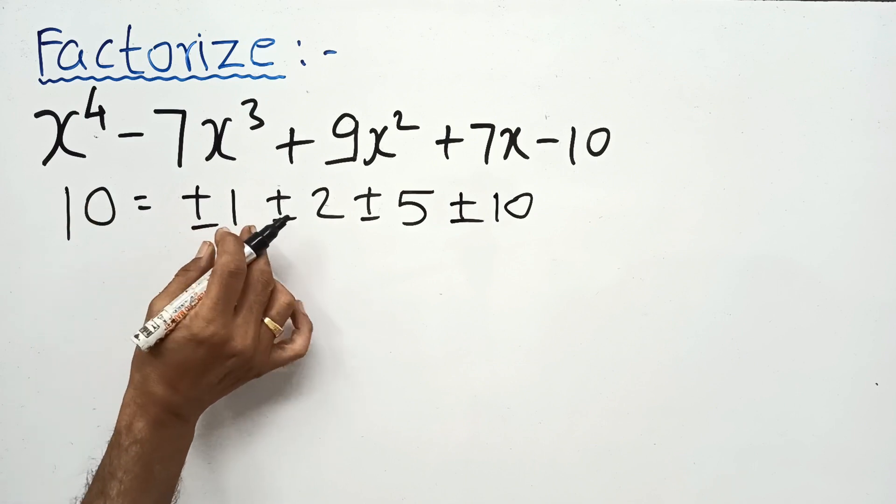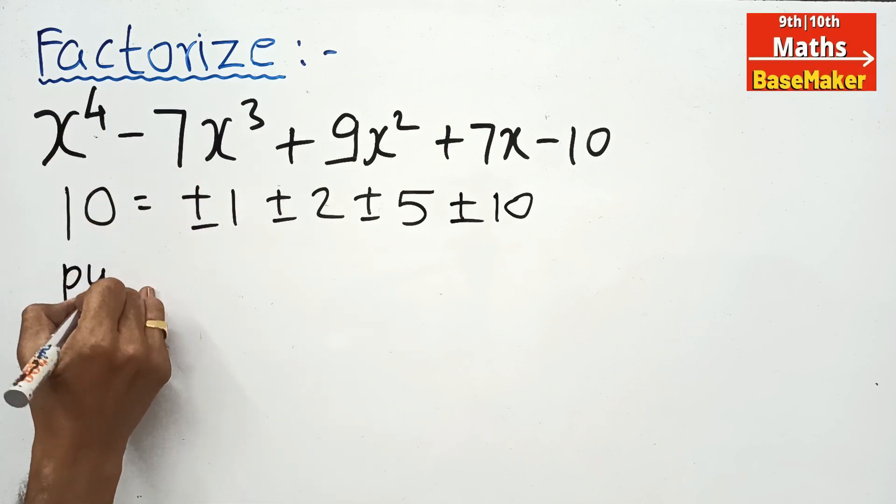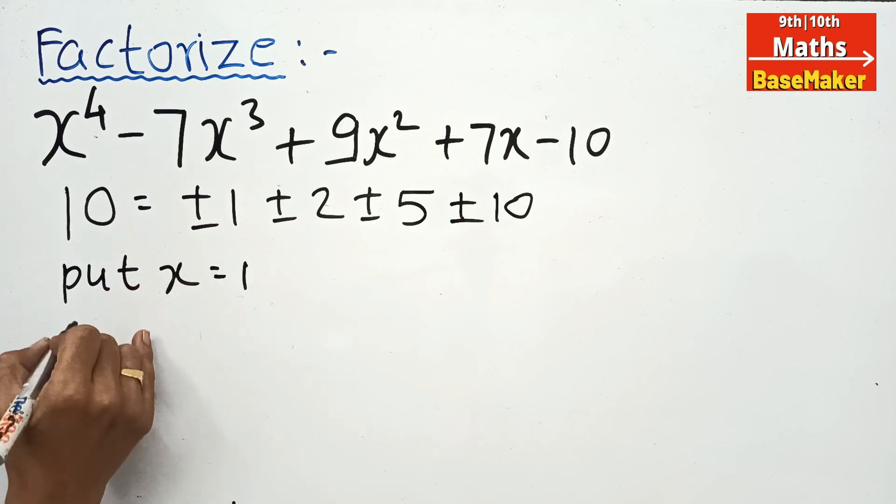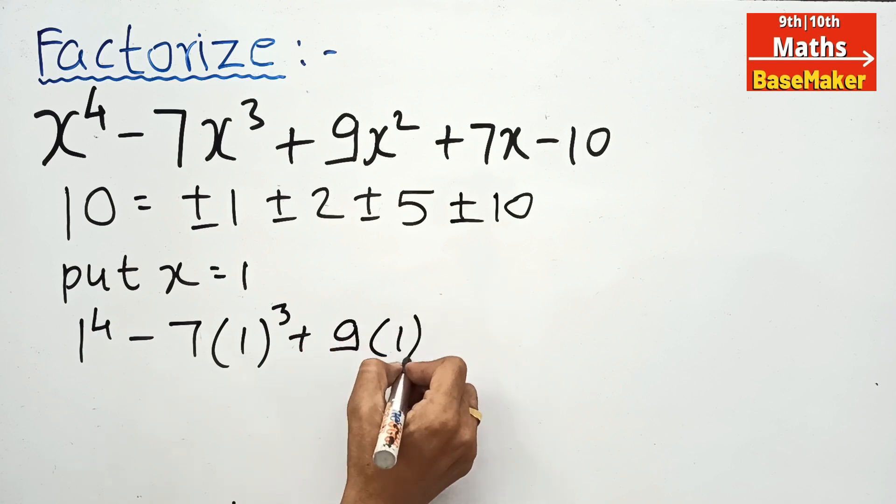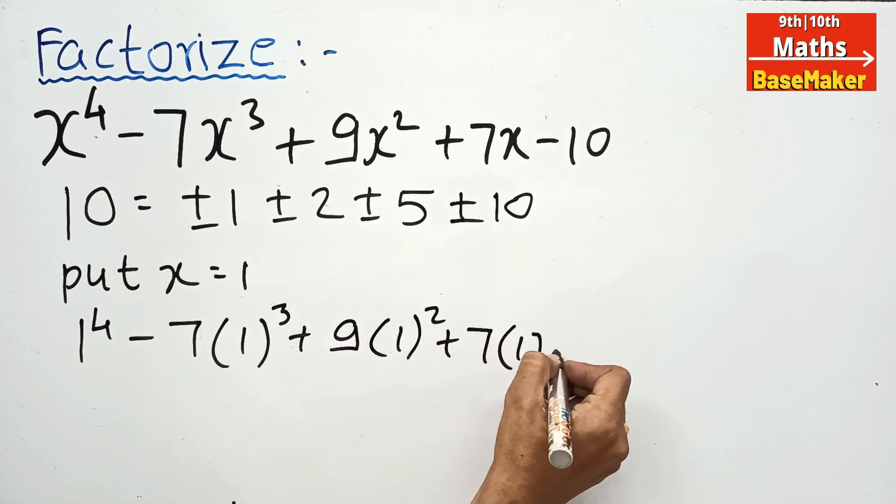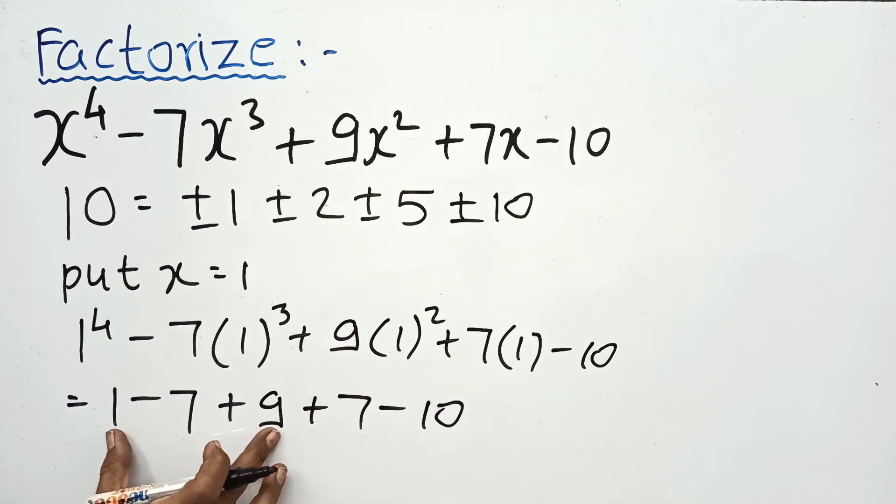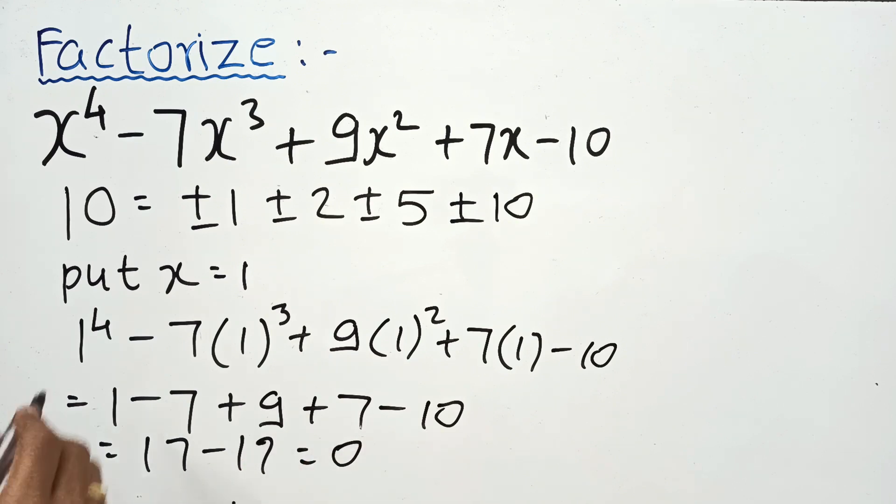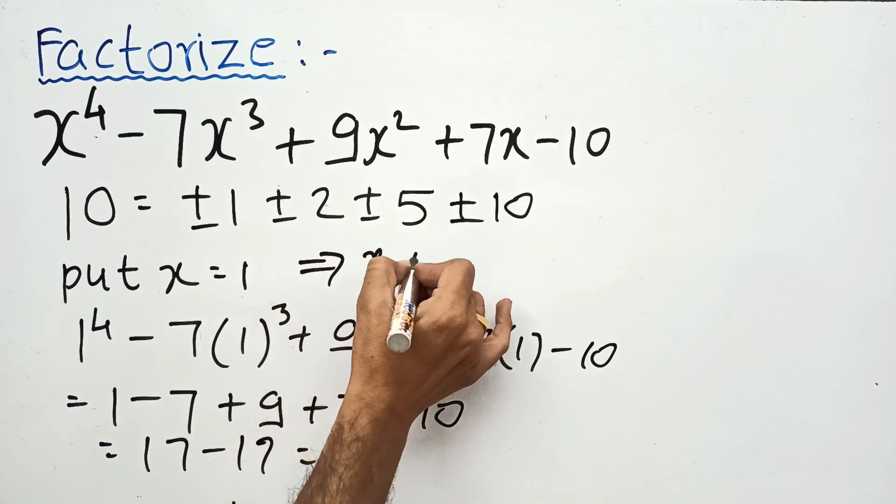Now one by one, we will use the trial and error method. Let us first put x equals 1. This gives 17 minus 17 equals 0. If we put x equals 1, it becomes 0, therefore x minus 1 is a factor.